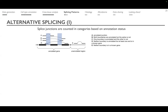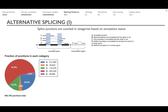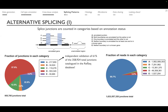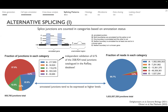The categories are: fully annotated junction, boundaries annotated but splice not annotated, one boundary annotated and one not, and neither boundary in a known gene. Counting across the atlas the fraction of junctions in each category, there is independent validation of 61% of total junctions catalogued in the RefSeq database — the current reference. Annotated junctions tend to be expressed at higher levels, which may be why other junctions have yet to be annotated.